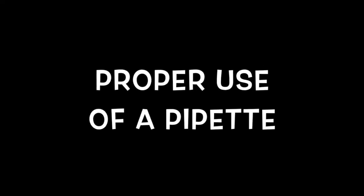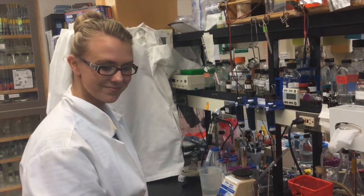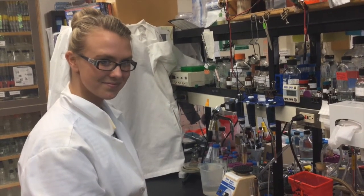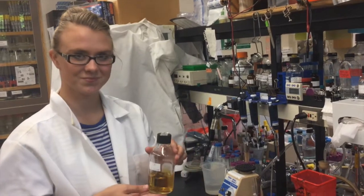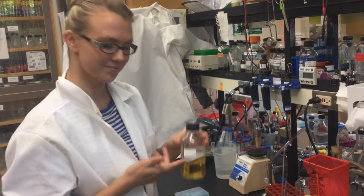Next, we will learn how to properly transfer fluids using a pipette. Let's look at how to grow bacterial cells in a broth. To prepare, we will transfer some sterile broth, our liquid growth medium, into some sterile tubes.